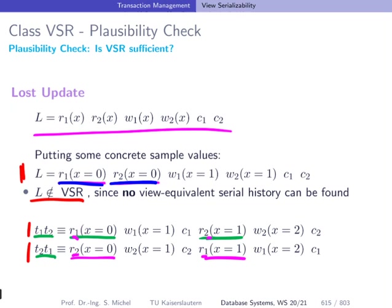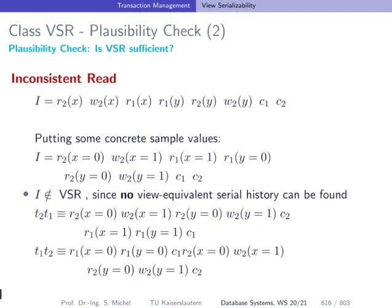Here we see inconsistent read. Let's put in again some concrete values for our schedule here. Let's see how the reads look like. So we see here we are reading x equals 1, and here we have x equals 0, and x equals 1, and here we have y equals 0, and y equals 0, right?